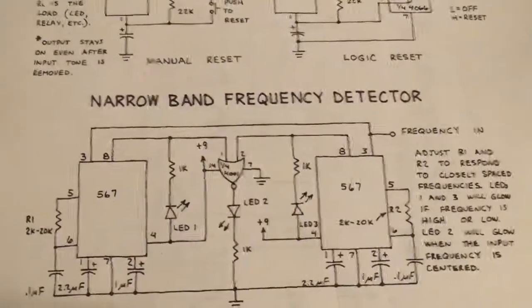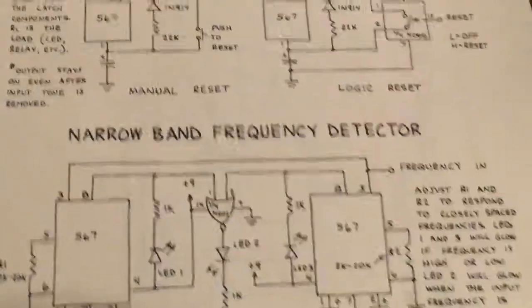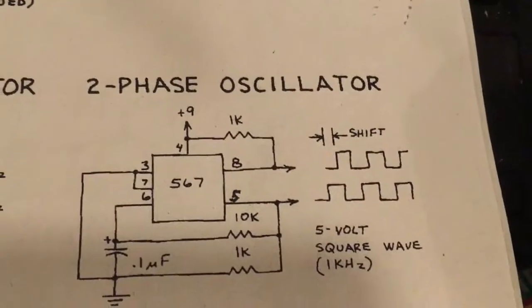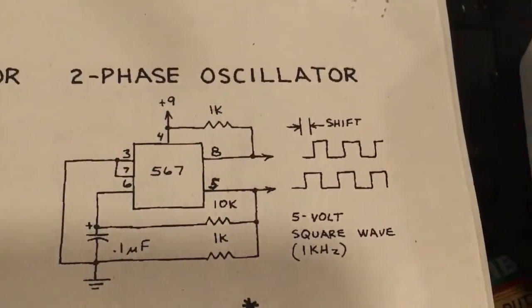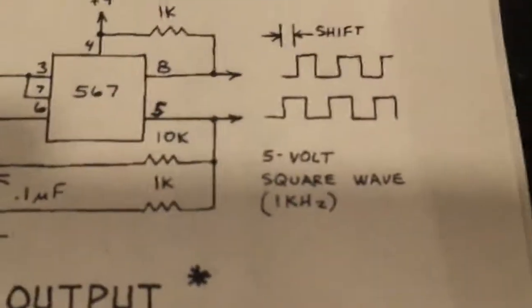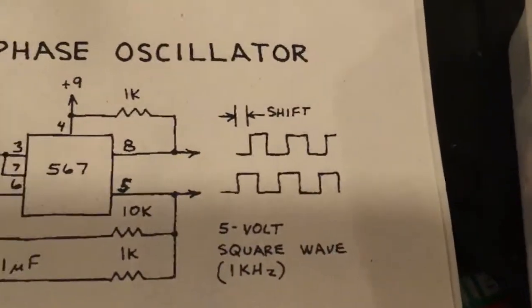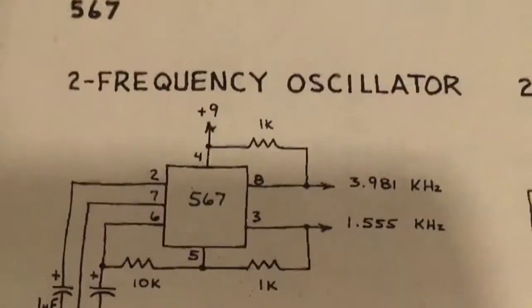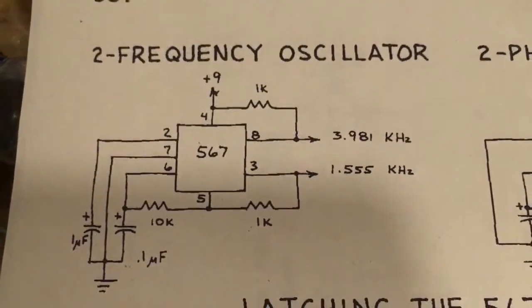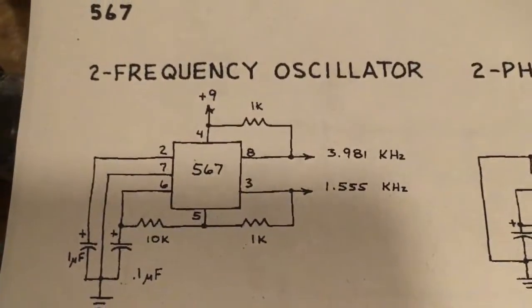For this project we use 567 as a two-phase oscillator with good output starting from 1 kHz up to 2.8 MHz. We have two separate frequency oscillators here, two different channels.